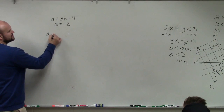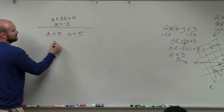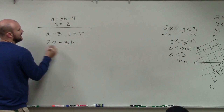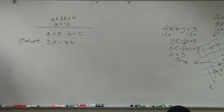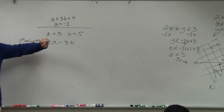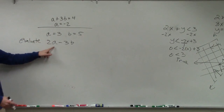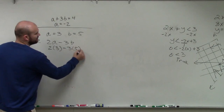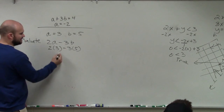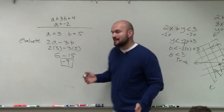If we had an equation where a equals 3 and b equals 5, and I gave you the expression 2a minus 3b and said evaluate — you plug 3 in for a and 5 in for b. So I'd have 2 times 3 minus 3 times 5, which becomes 6 minus 15, giving us negative 9.